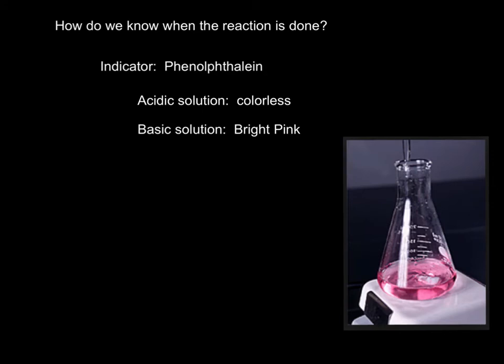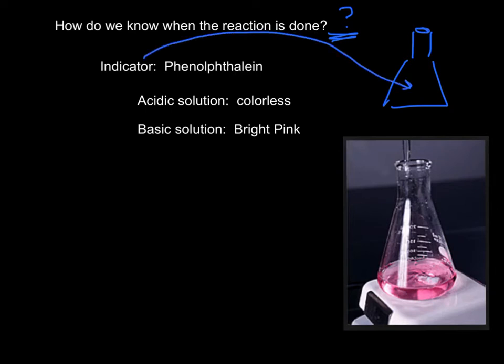When we did this reaction, how did we know it was done? In the flask, we not only put some acid — we also put an indicator. The indicator we'll use for an acid-base reaction is called phenolphthalein. Most indicators are one color if your solution is acidic and a different color if your solution is basic. Phenolphthalein is colorless in acid and a bright pink color when basic — something you couldn't possibly miss. So as we add NaOH from the burette into our flask, we'll see a little bit of pink color as it hits the indicator.